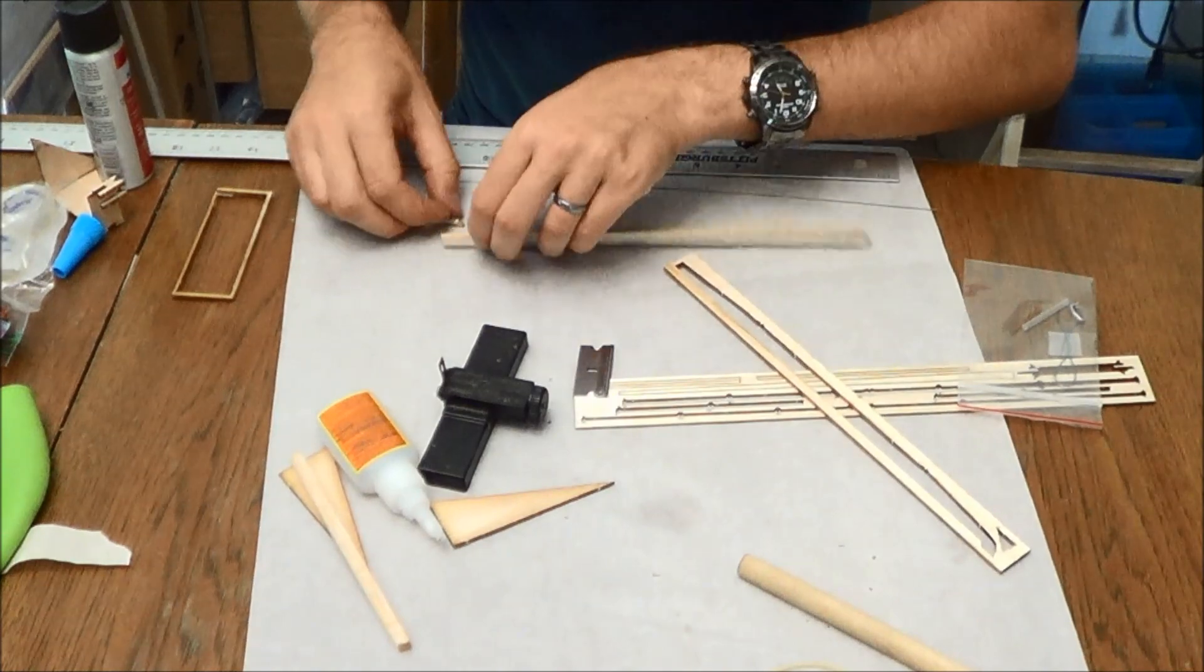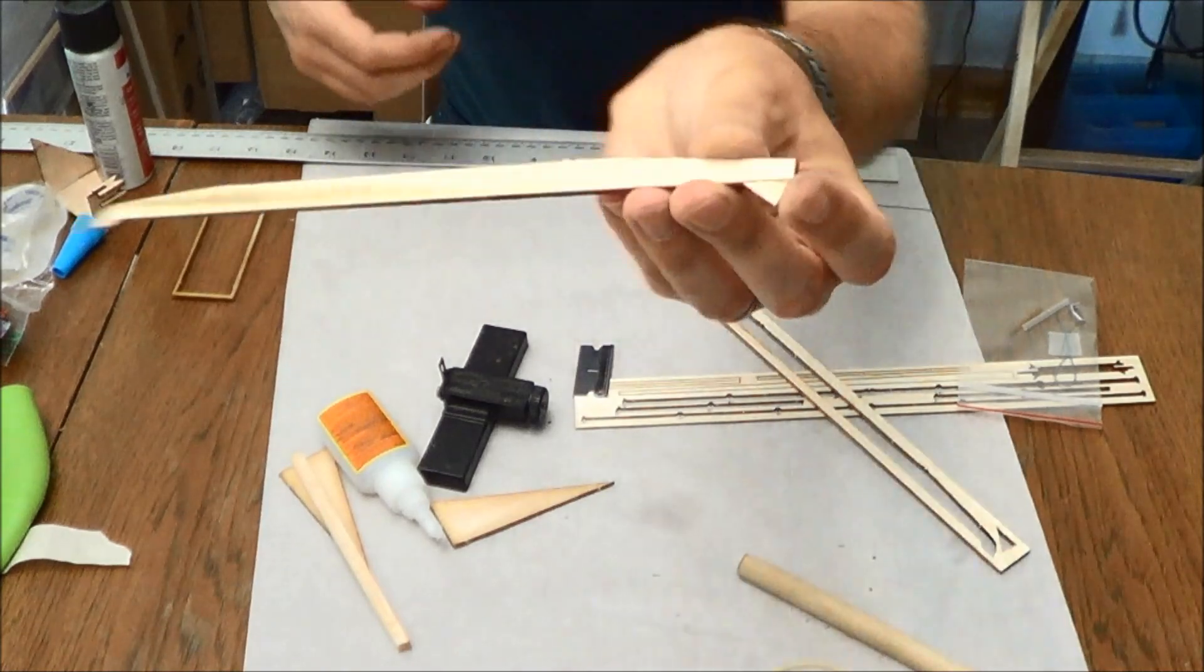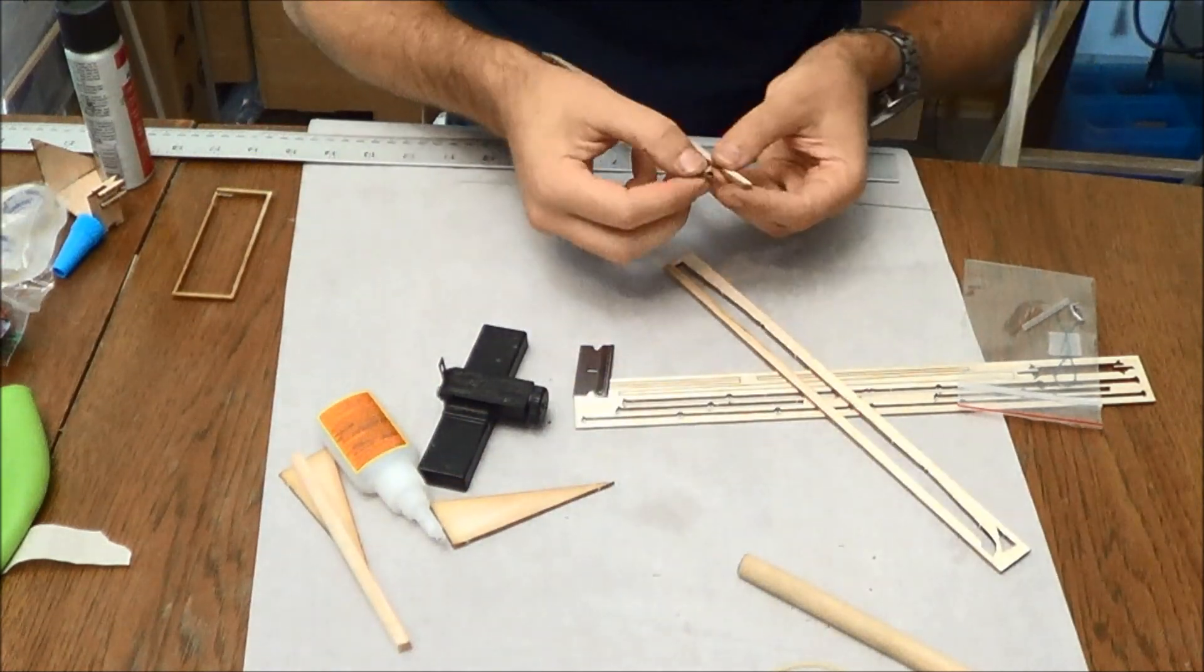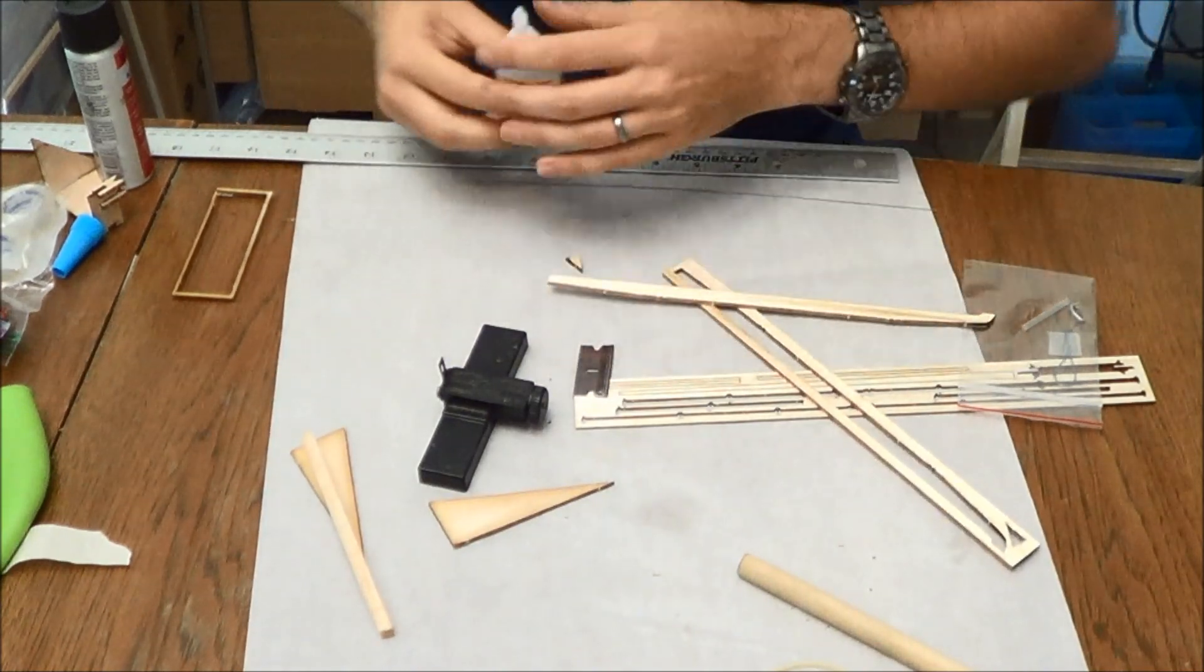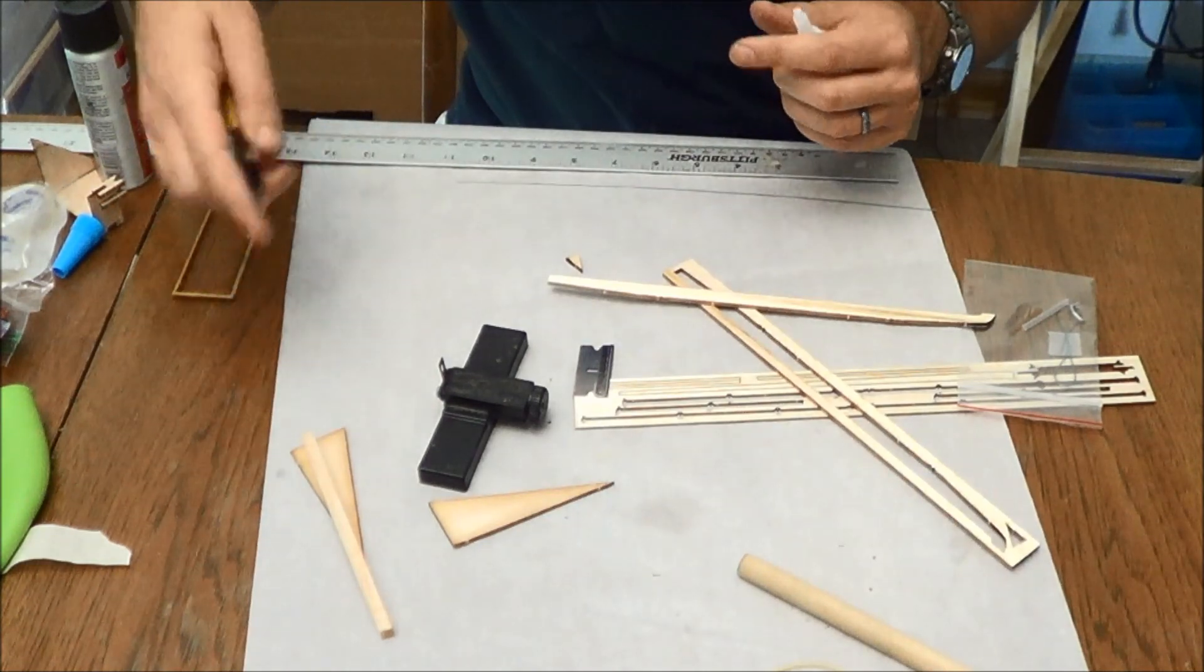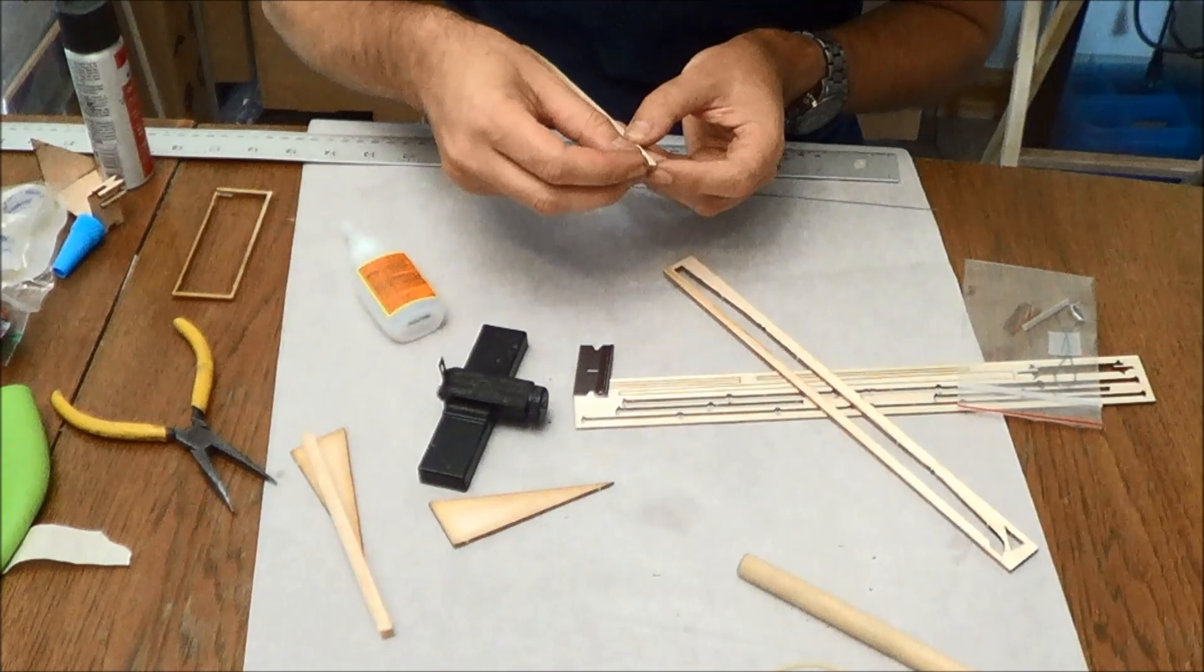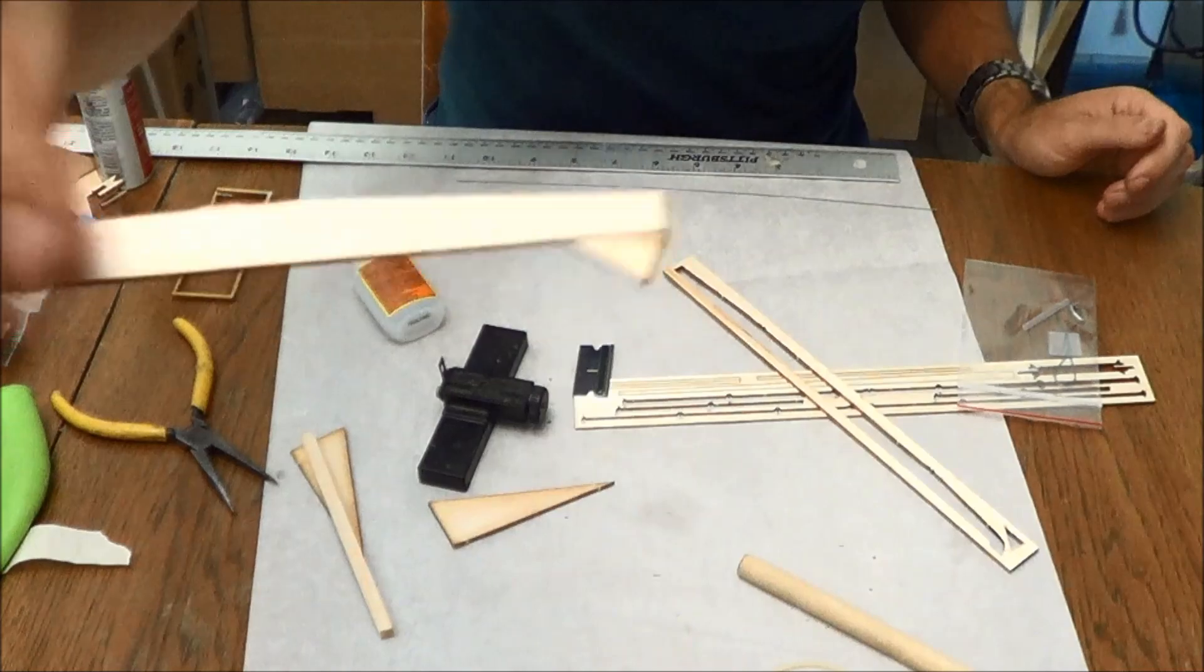Now set that down here so the grain is going diagonally. The grain of that triangle is going that direction, and I've also got an accelerator on the end of my CA nozzle, so you can see now how it's attached.